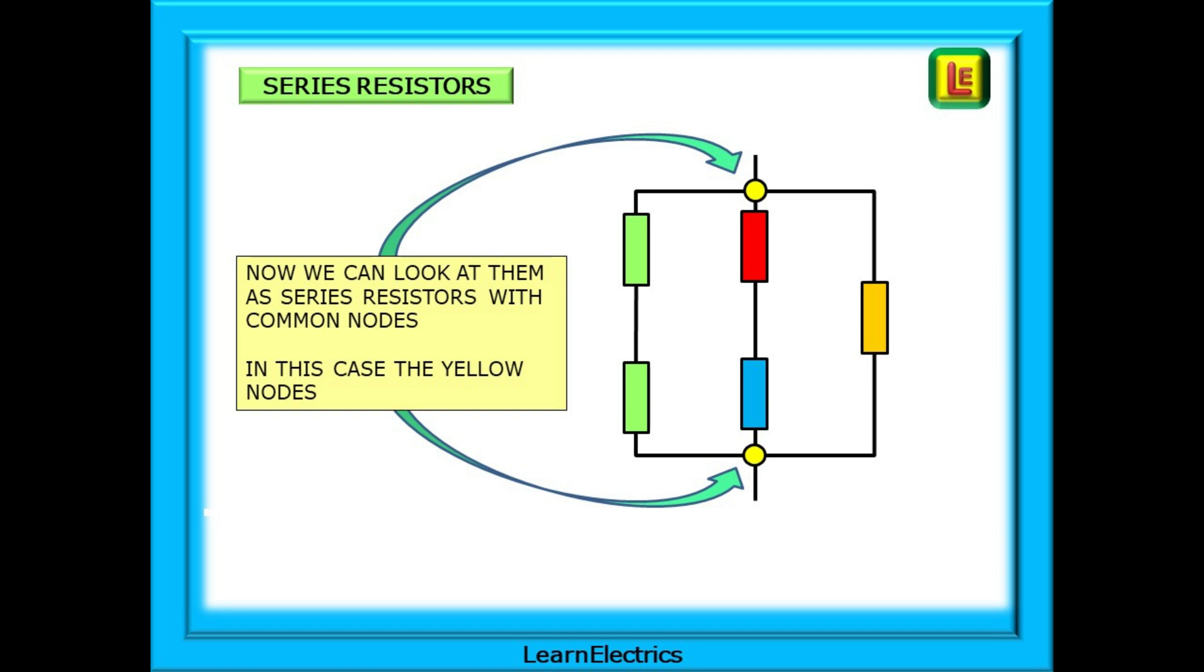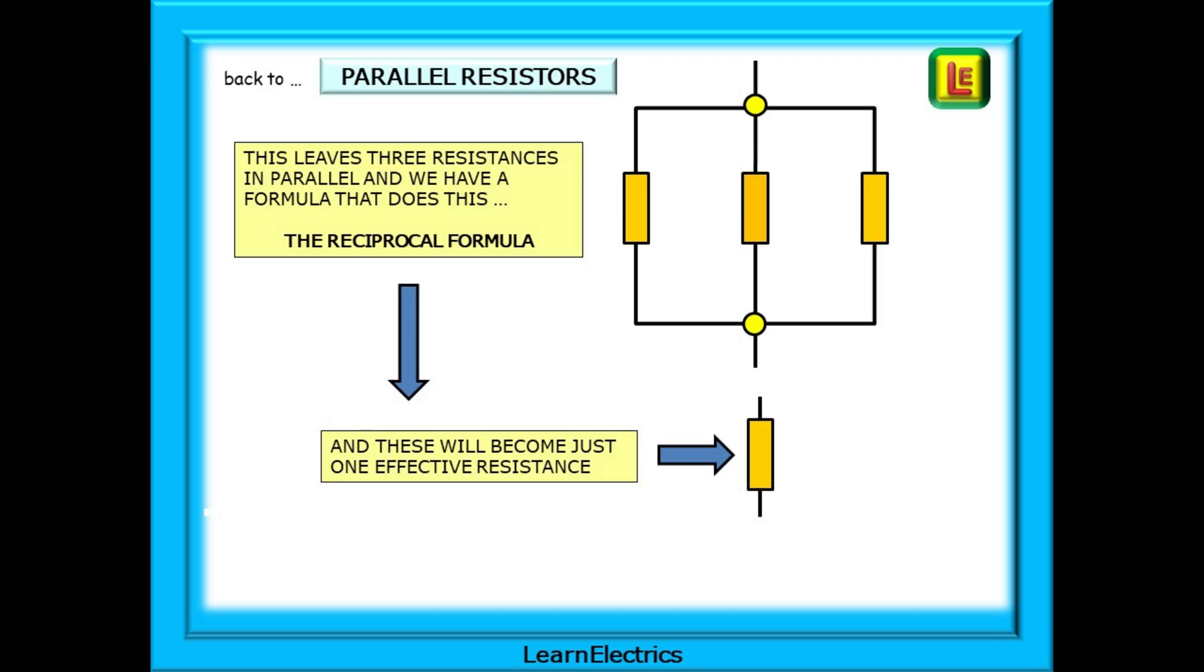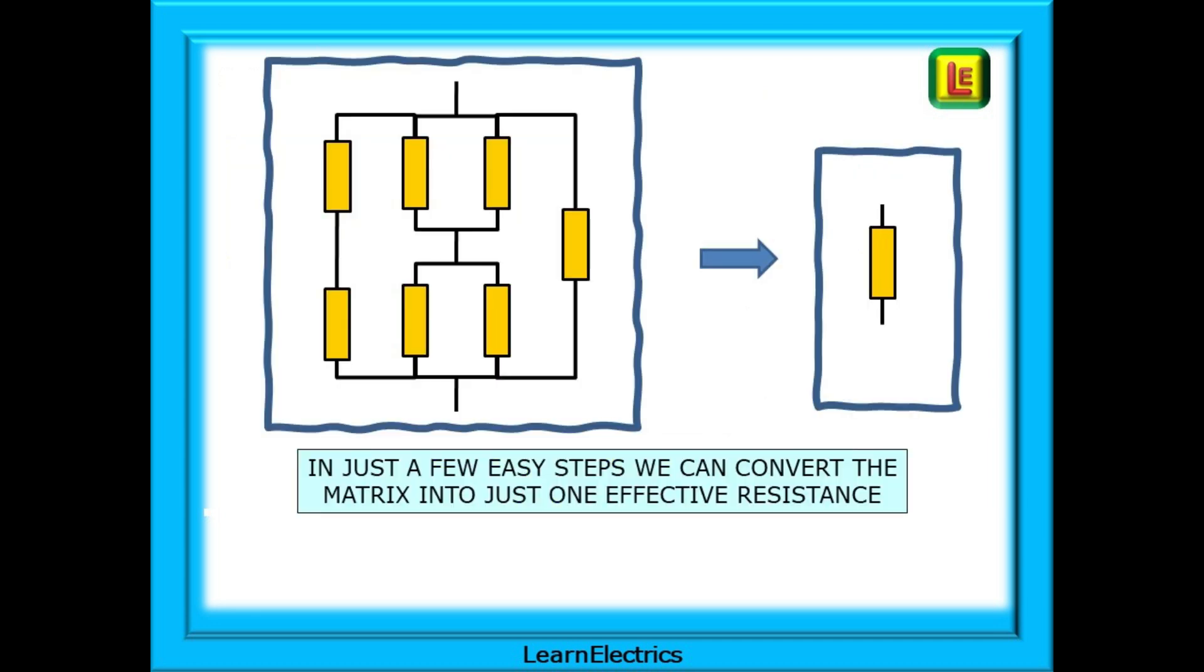Then we have the red and blue resistors that can be added together and the single resistor on its own. This now leaves us with three resistances in parallel and we have a formula that works this out: the reciprocal formula. One calculation now and we will have our final answer. In just a few easy steps we can convert the matrix into just one effective resistance.